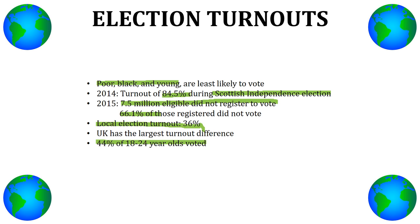In 2014, eighty four point five percent of people voted during the Scottish independence election. As you can see, this shows that a large number of Scots were very engaged, and that's why such a high number actually voted — because that's what they wanted.